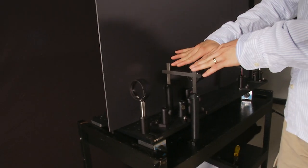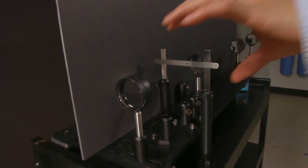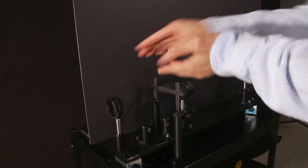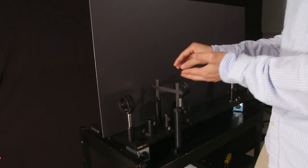Say we place an object, in our case a ruler, in the middle. If we didn't have the lenses, we would be able to see the ruler, but what the lenses do is they actually cloak the ruler.